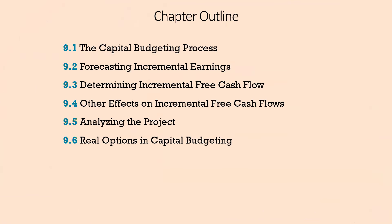The chapter outline is as follows: one, the capital budgeting process; two, forecasting incremental earnings; three, determining incremental free cash flow; four, other effects on incremental free cash flows; five, analyzing the project; six, real options in capital budgeting.